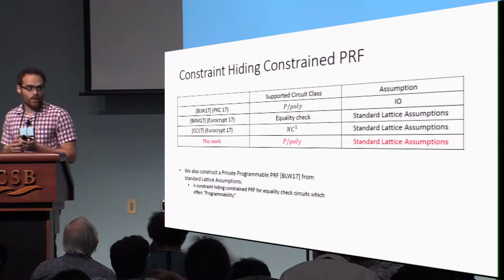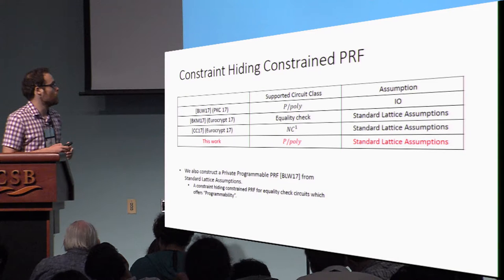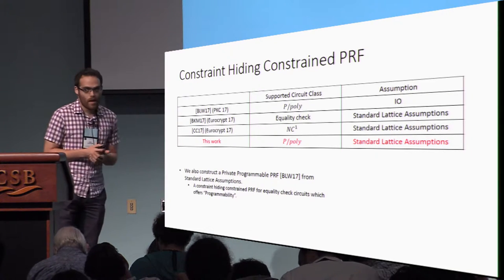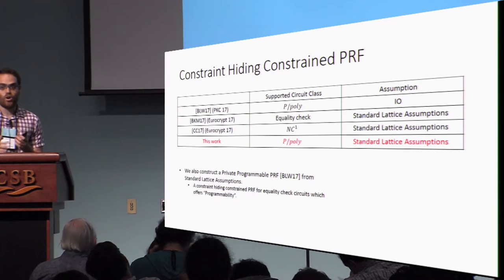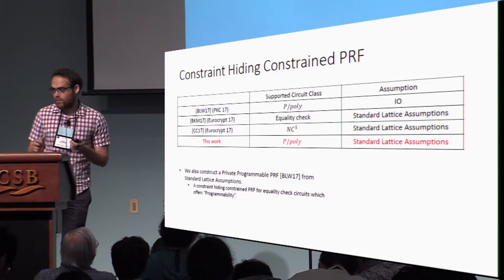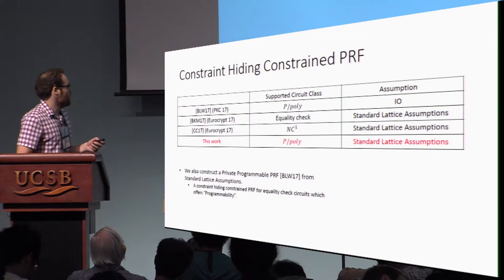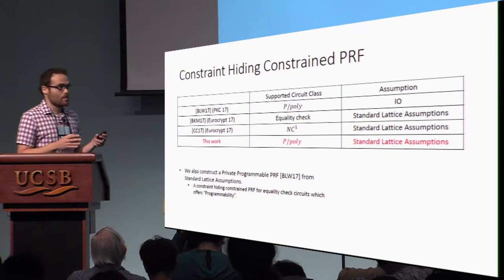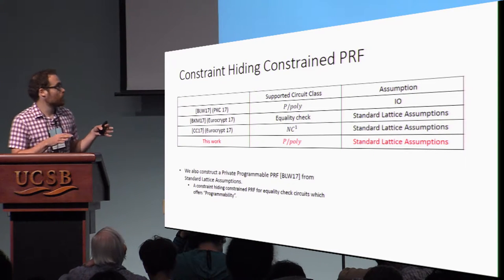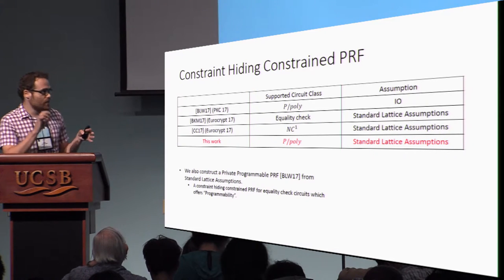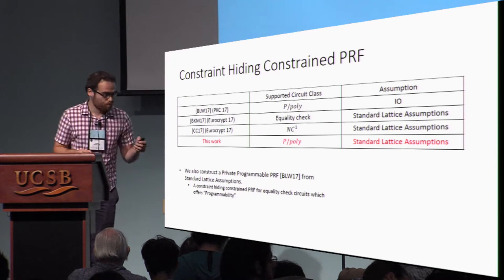In our work, we give a lattice-based construction which supports basically all polynomial-sized circuits. As a bonus, we also construct lattice-based private programmable PRFs. A private programmable PRF — as you may remember from this morning's talk — is a constraint-hiding constrained PRF for the circuit class of equality check circuits, which allows us to program the value of the PRF at the constrained point.